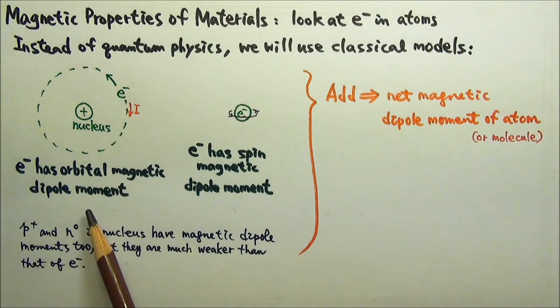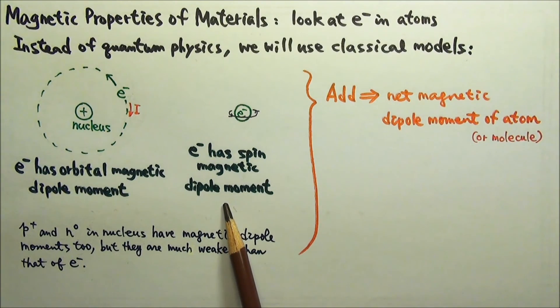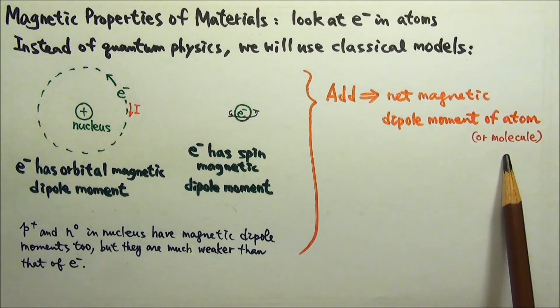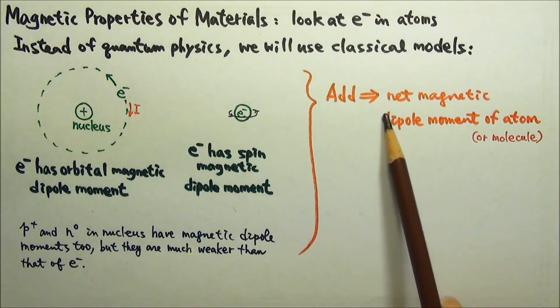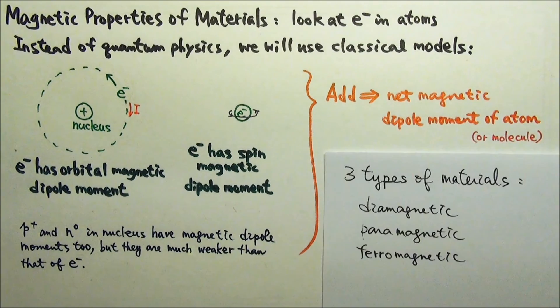When we add the orbital magnetic dipole moment vector and the spin magnetic dipole moment vector of every electron in an atom or molecule, we get the net magnetic dipole moment of the atom or molecule. The dipole moment vector of each atom or molecule combined gives us the net or resultant magnetic dipole moment of the material.